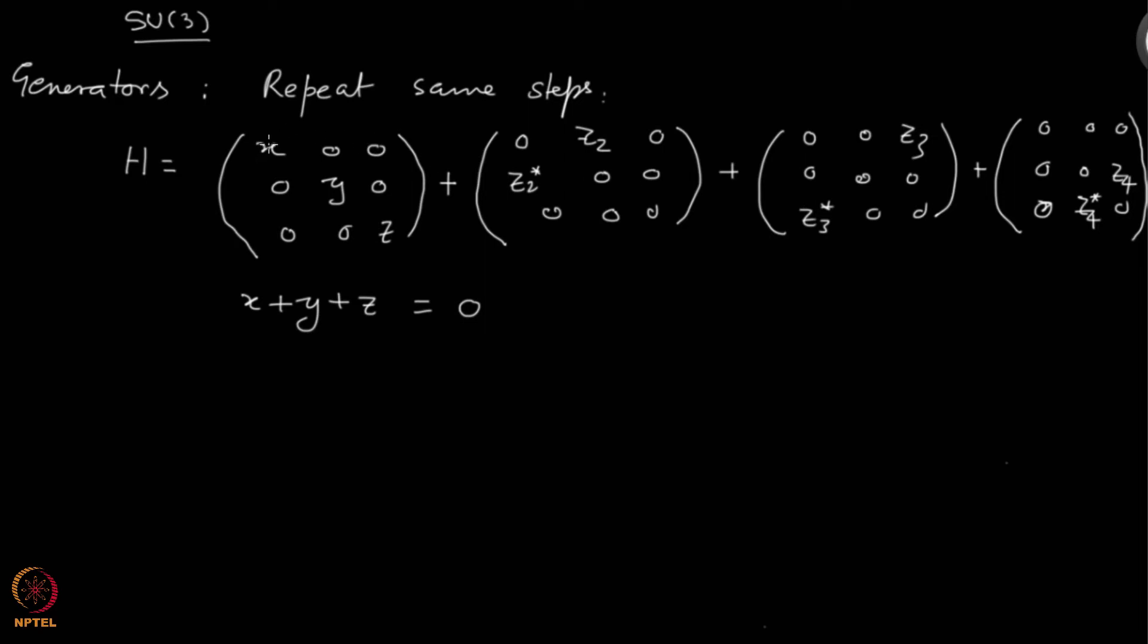The tracelessness condition tells you that this is 0. This will correspond to 2 matrices here, 2 here—that's 6—and although there are 3 entries here, so would be 3, but then you have one constraint, so 2. Each one is giving 2, so it is 8, 4 times 2 is 8. You get 8 generators.